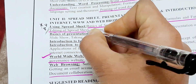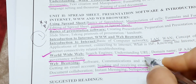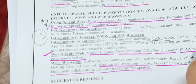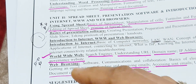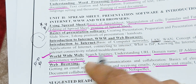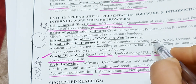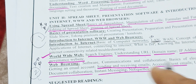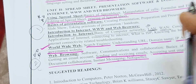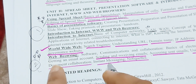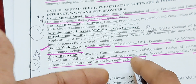The number one question in Unit 2 is using spreadsheet — it is the most important. The number two question is search engines: understanding URL, domain name, IP address, and using e-governance websites. WWW — World Wide Web — that full form is important. After learning these two, move to LAN and WAN. Web browsing can be skipped if needed.